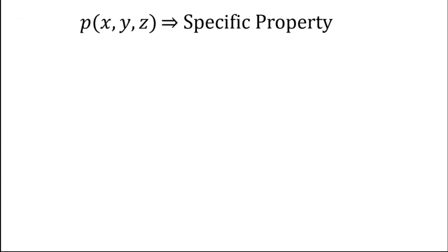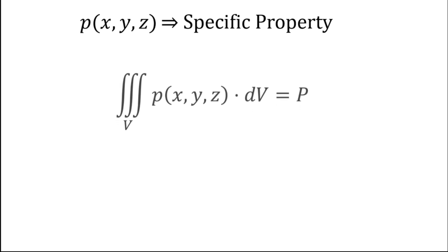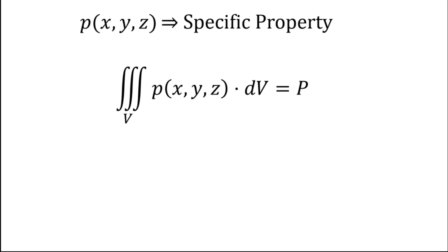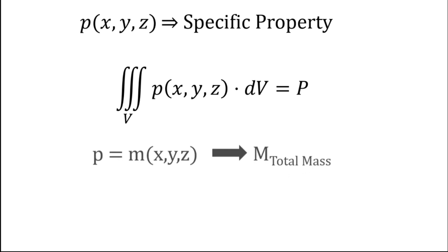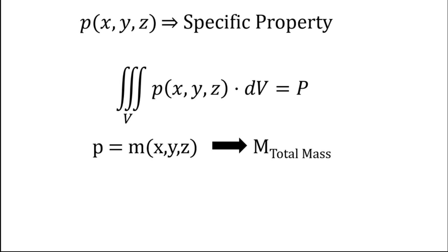Let's imagine we have a function p(x, y, z) which represents a specific property — let's say it's a density function. If we integrate that function along the volume V — that is, p(x, y, z) with respect to dV — we get the total of that specific property.